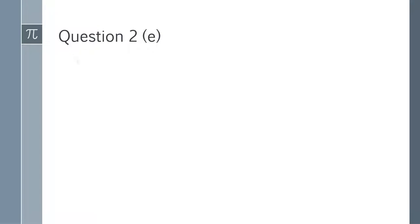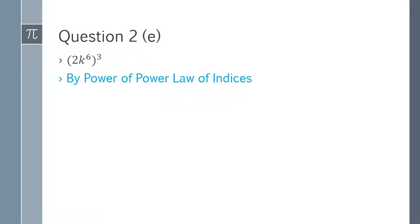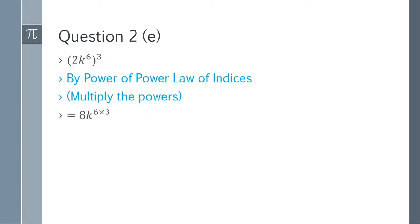Question 3e: (2k^6)^3. We use the power of power law. 2^3 = 8, and k^(6×3) = k^18. The answer is 8k^18.